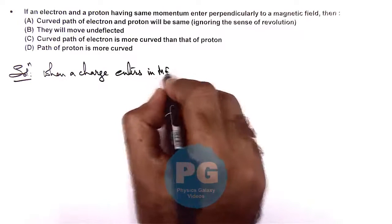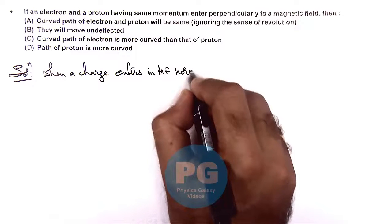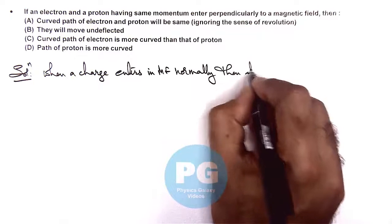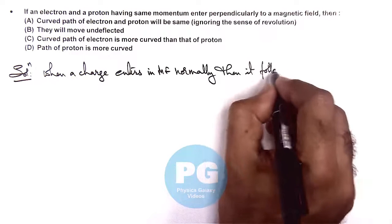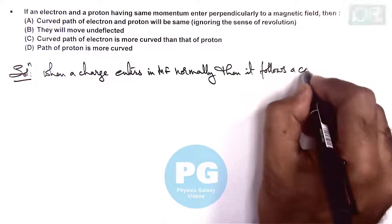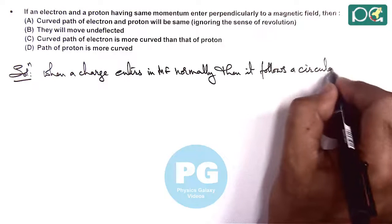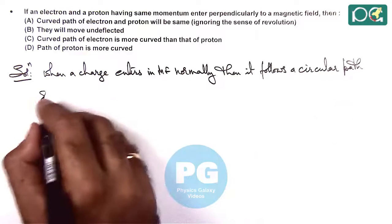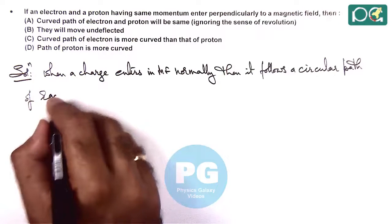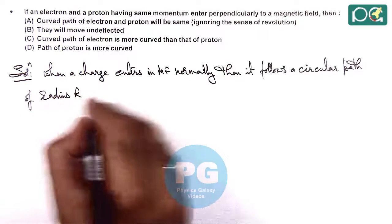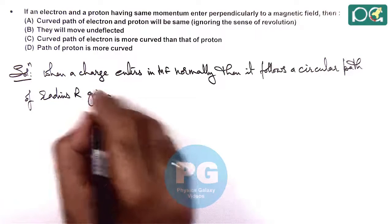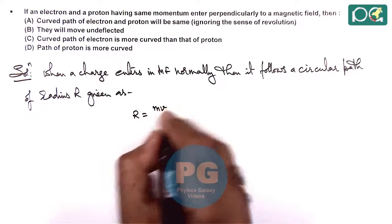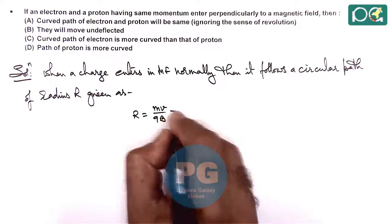...normally, then it follows a circular path. For the circular path, we can write the radius r as: radius of circular path is given as mv over qb, where mv is the momentum.